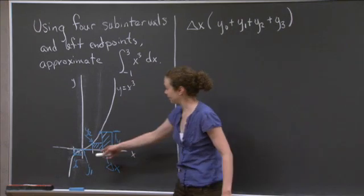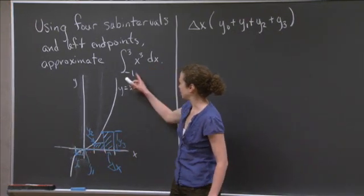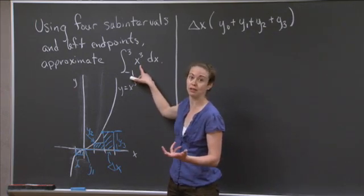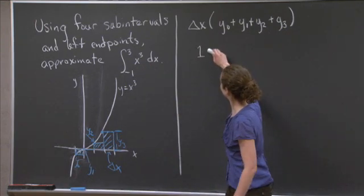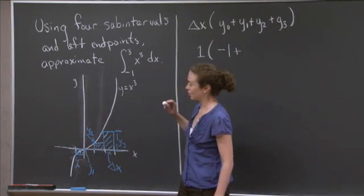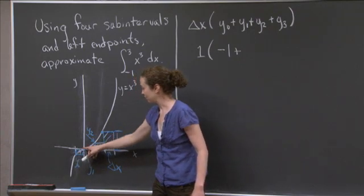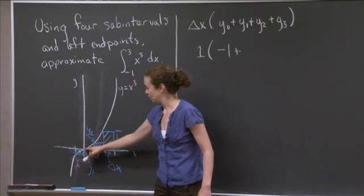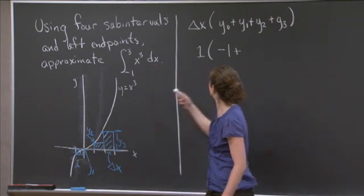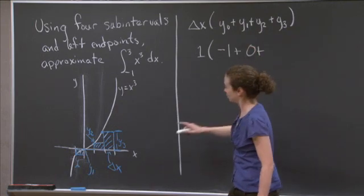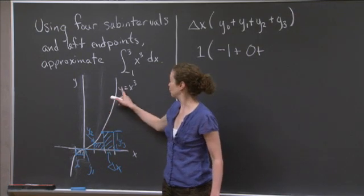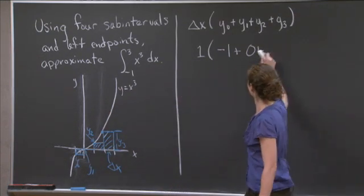So let's evaluate these things. y0 should be the value of the function at x equal negative 1. When x is negative 1, the function, remember, is x cubed, so I get negative 1 cubed, which is just negative 1. So delta x is 1. y0 is negative 1. y1 is the value of the function at x equals 0, because my left endpoints are minus 1, 0, 1, and 2. So the second one is 0 as the input. At x equals 0, I get 0 as an output. The y2 is going to be this third left endpoint. That's at x equal 1, 1 cubed, 1 cubed is 1. So I get a 1 there.